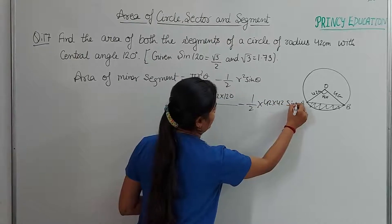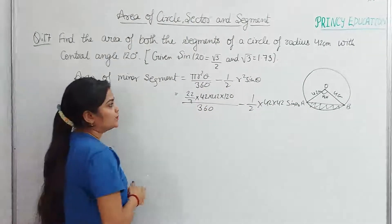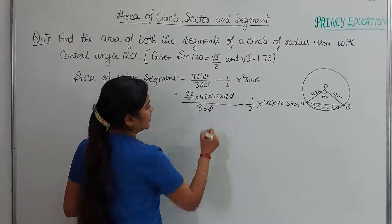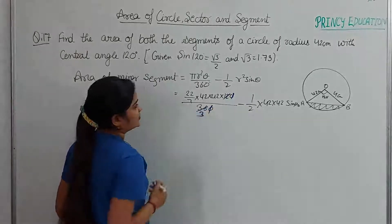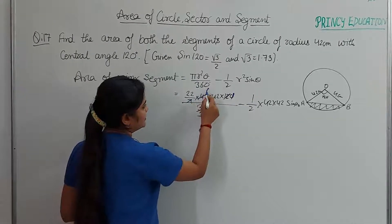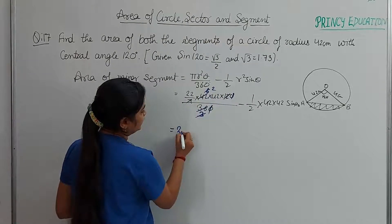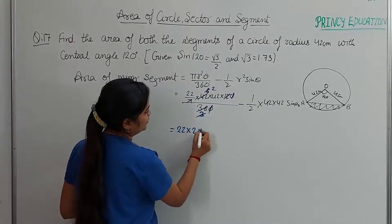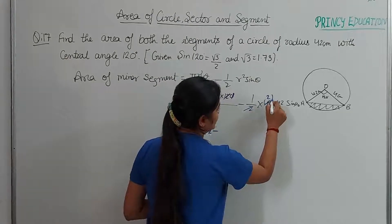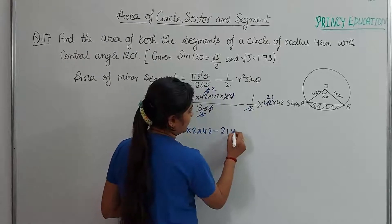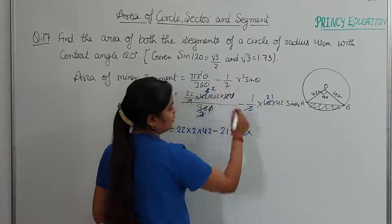Substituting: area of minor segment = (22/7) × 42 × 42 × (120/360) − (1/2) × 42 × 42 × sin 120°. Sin 120° = root 3 upon 2, and root 3 = 1.73.